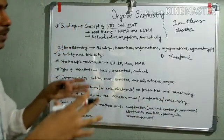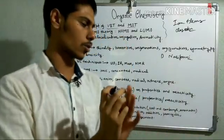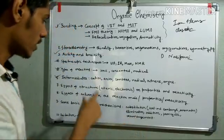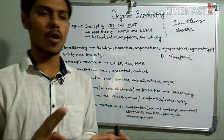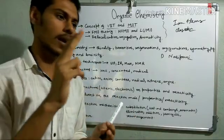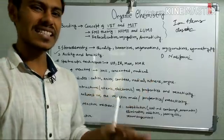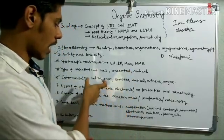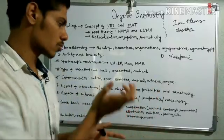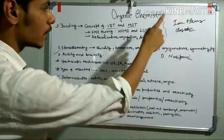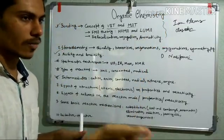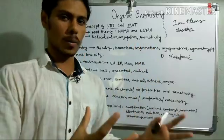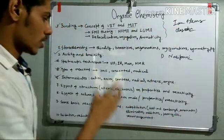Next is intermediate chemistry — proper knowledge of the structure, stability, and reactivity of intermediates is another very important topic. You should know about carbocations, carbanions, carbenes, radicals, nitrenes, and arynes (benzyne). For carbocations and carbanions, read Peter Sykes and Carey & Sundberg Part A. For radicals, nitrenes, and carbenes, Claydon is sufficient. For carbanions and carbocations, also read Carey & Sundberg and Ian Fleming — in the Ian Fleming book, negative hyperconjugation and the stability of anions are nicely explained.